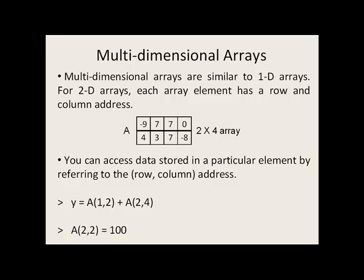In this case, A is a 2x4 array. It has two rows and four columns, or eight total elements. You can access the data that's stored in a particular element by referring to the row column address.